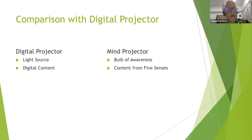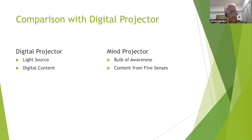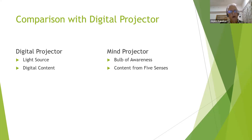Now that we have understood that projection is the only truth, let's try to understand how this projection is done by the mind. We all know about a digital projector. The digital projector has two major components: a light source and digital content. The digital content is projected out onto a screen — that's how the projector works. The mind is also almost like a projector. It has two components: one is the bulb of awareness, which is like the light source, and then it has content which comes from the five senses, and that content is what is projected out there. Let's understand where this bulb of awareness resides.